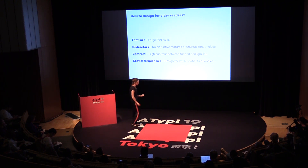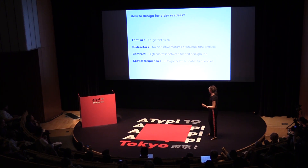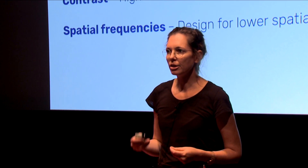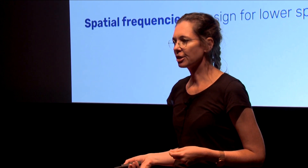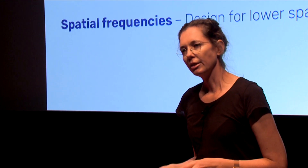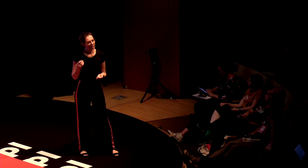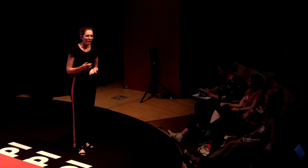So how should we design for older readers? Use larger font sizes. Be careful with distractions and don't have irrelevant elements. Don't use fonts that are unusual to the reader. Use high contrast between foreground and background. And you should also focus on the lower spatial frequencies, which in font design means bolder weights and less stroke contrast. Thank you very much.